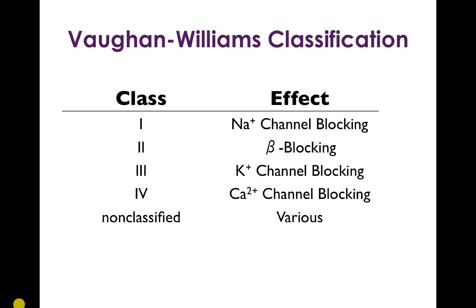The class 1 drugs are the sodium channel blockers, the class 2 drugs are the beta blockers, the class 3 drugs are the potassium channel blockers, and the class 4 drugs are the calcium channel blockers. There are also two important drugs that fall outside of the Vaughan Williams classification: adenosine and digoxin, listed here as non-classified with various effects.